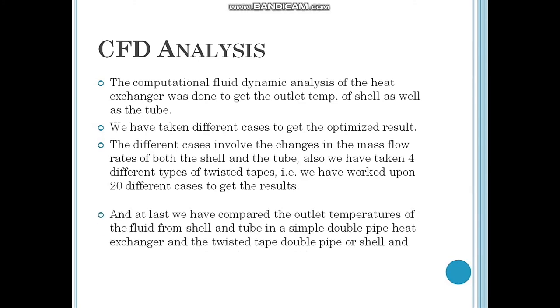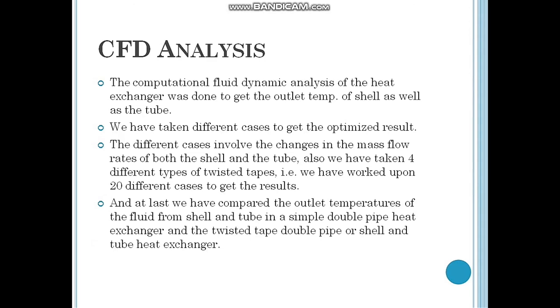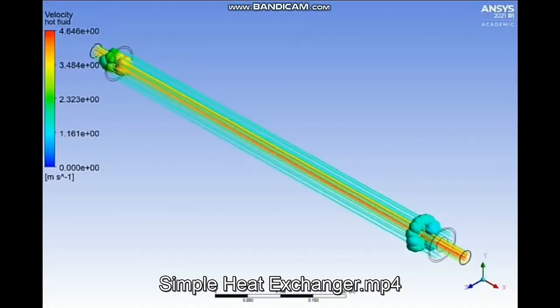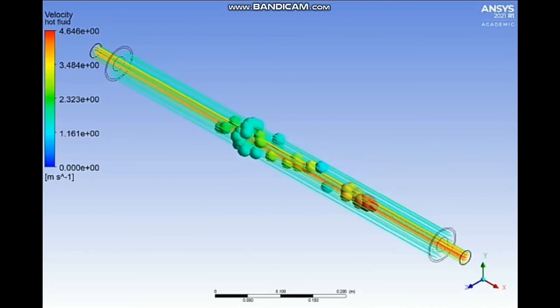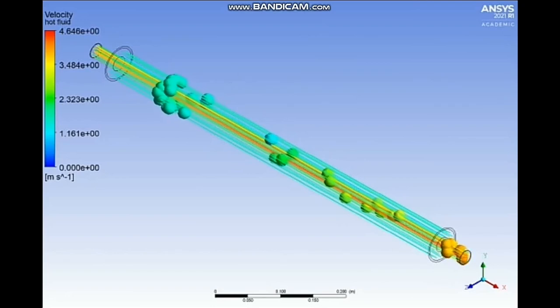Total cases were 20, and at last we compared the outlet temperature of the fluid from the simple and twisted tape type shell and tube heat exchanger. This is the animation of flow in a simple shell and tube heat exchanger, in which we can see that the hot fluid is inside the tube and the cold fluid is inside the shell. The heat energy is transferred from the hot fluid to the cold fluid.